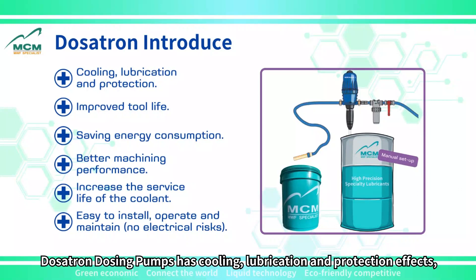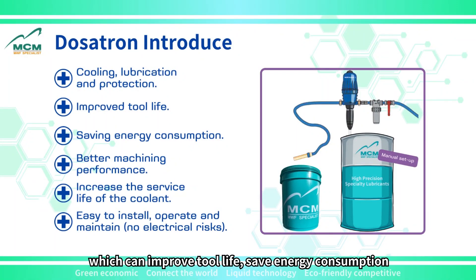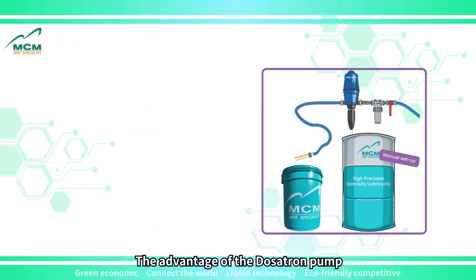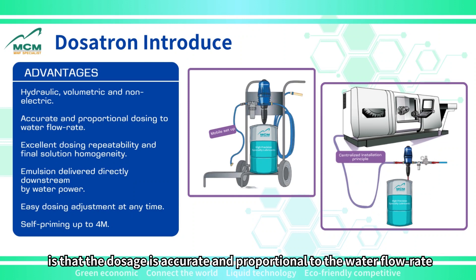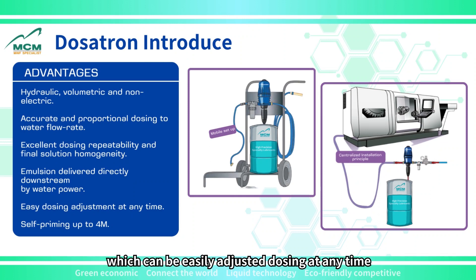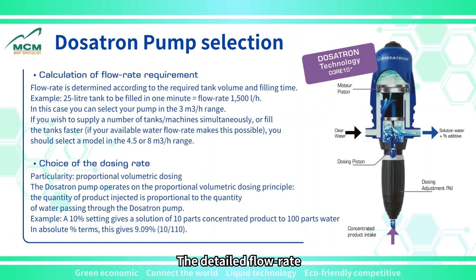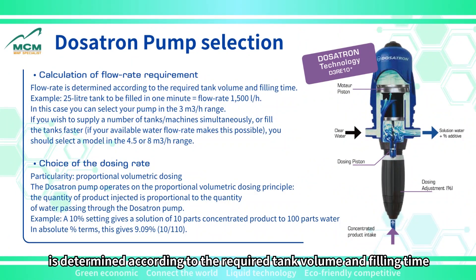Dosatron dosing pumps have cooling, lubrication, and protection effects, which can improve tool life, save energy consumption, enable better machining performance, extend the service life of cutting fluid, and are easy to install, operate, and maintain. The advantage of the Dosatron pump is that the dosage is accurate and proportional to the water flow rate, which can be easily adjusted at any time. The detailed flow rate is determined according to the required tank volume and filling time.